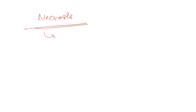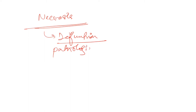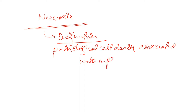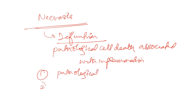We will now start with necrosis. What is the definition of necrosis? It is pathological cell death associated with inflammation. You need to know these two things: number one, it is pathological, and number two, it is associated with inflammation.